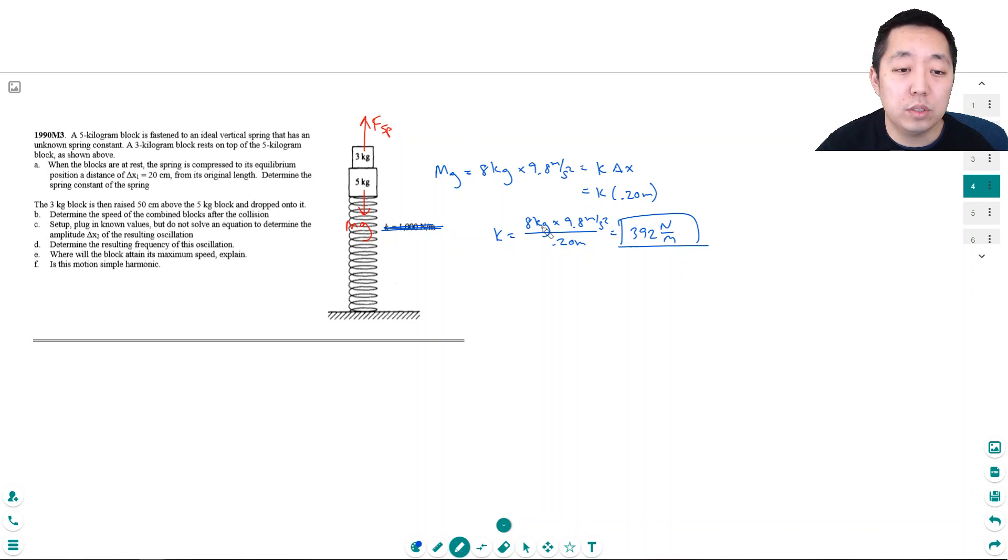Let's use our spring constant 392. I think it makes more sense. This is 1990, they might have used 10 for this so it might have been even 400 to make the numbers work out a little nicer. I think it wasn't required for some of these to have a calculator; the numbers should have been simple enough to do without a calculator.